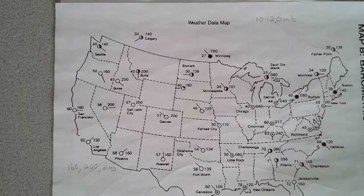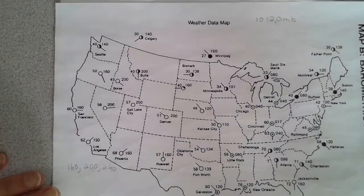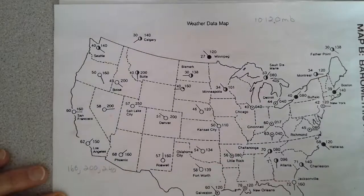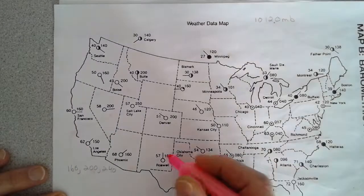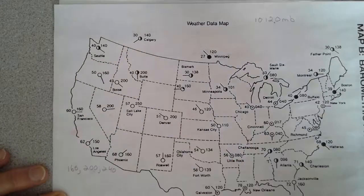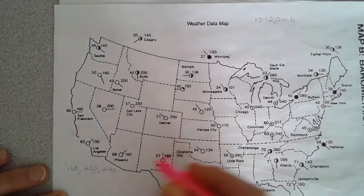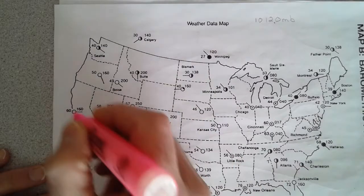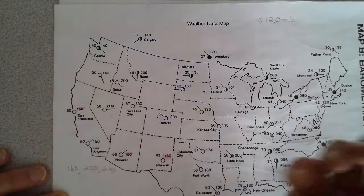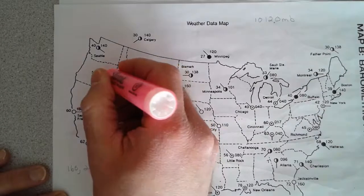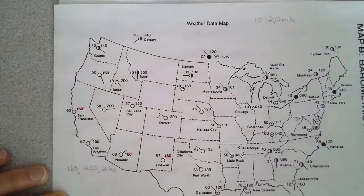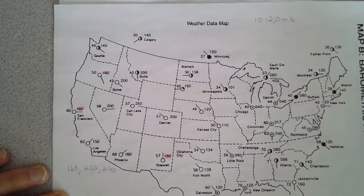Phoenix will connect to Roswell. 160 would be between Denver and Oklahoma City. Continue to follow down through San Francisco, and then from Phoenix to San Francisco. That gives us the 1,016.0 line, following the rules we set.